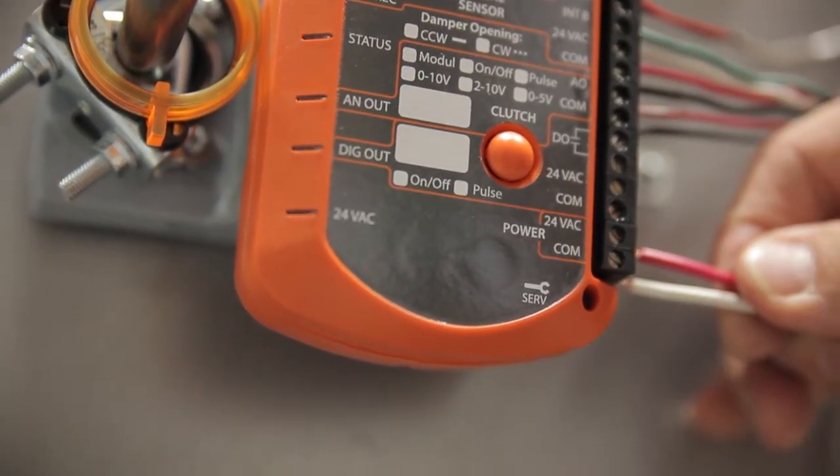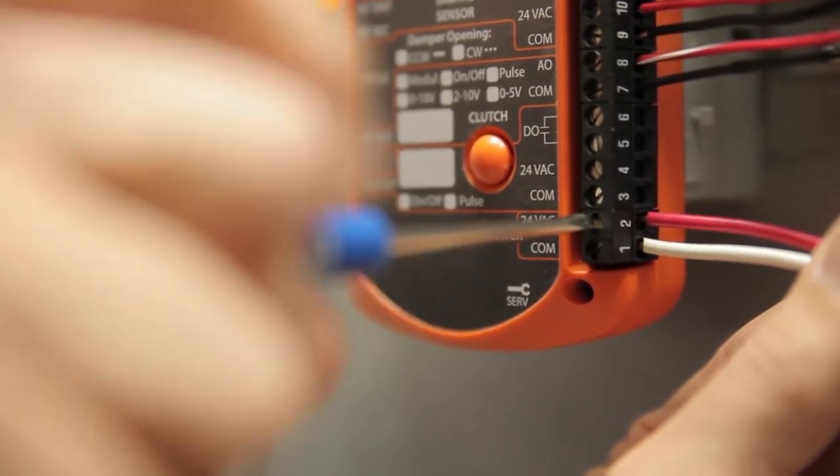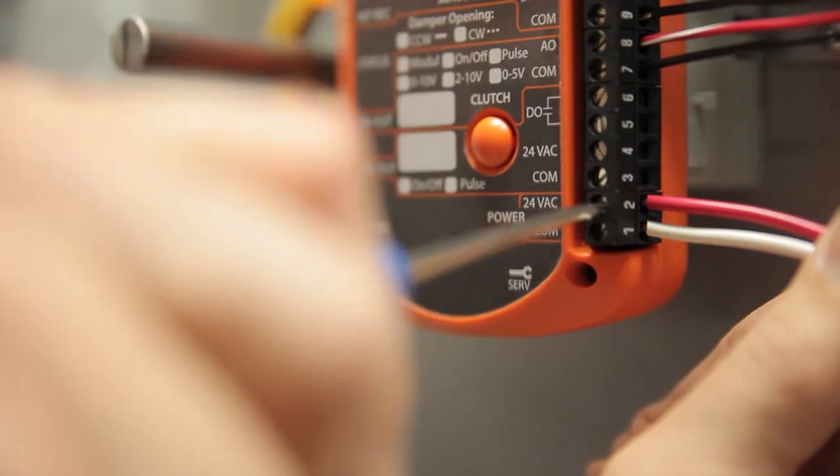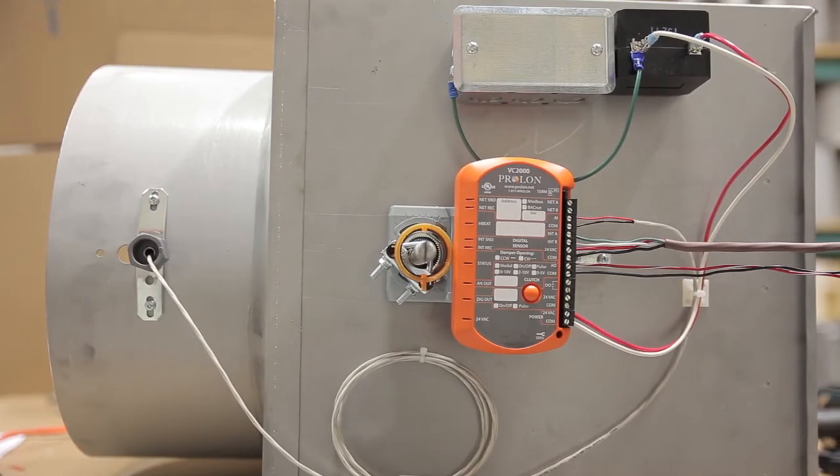You are now ready to power up the VC2000 with 24VAC through terminals 1 and 2. Terminal 1 is the common, while terminal 2 is your live supply power. Ensure that the common terminal is grounded.